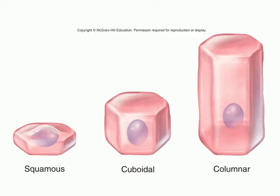The top layer can have different shapes. If the cells look squeezed and flat, you call it squamous. If it looks like a cube, you call it cuboidal. If it looks like a column, you call it columnar. Squamous means flat, cuboidal means looks like a cube, columnar means looks like a column — these are just translations based on cell shape.